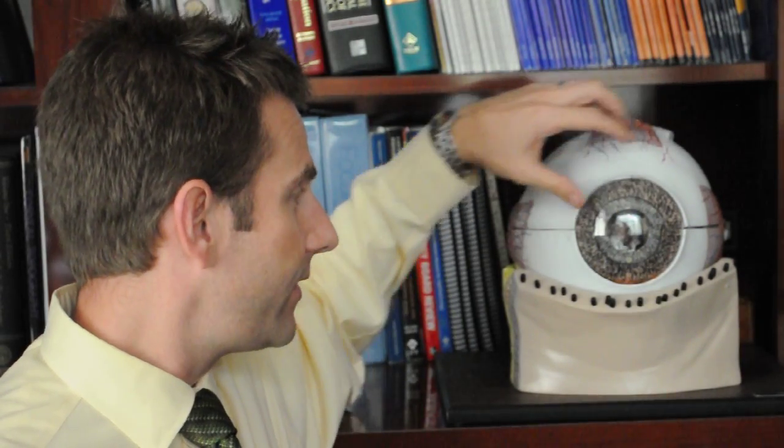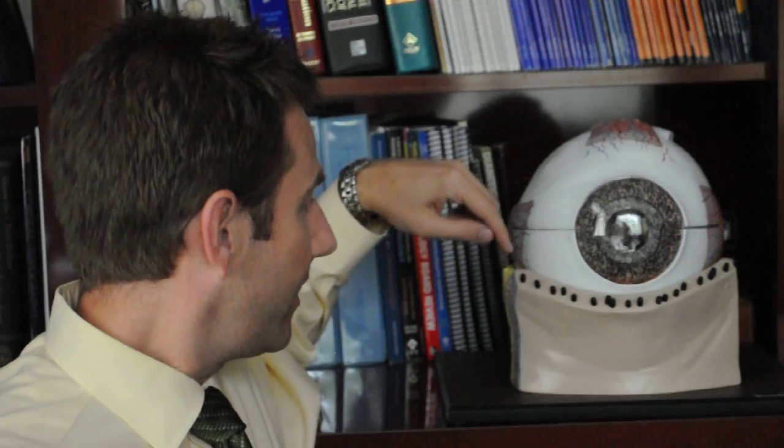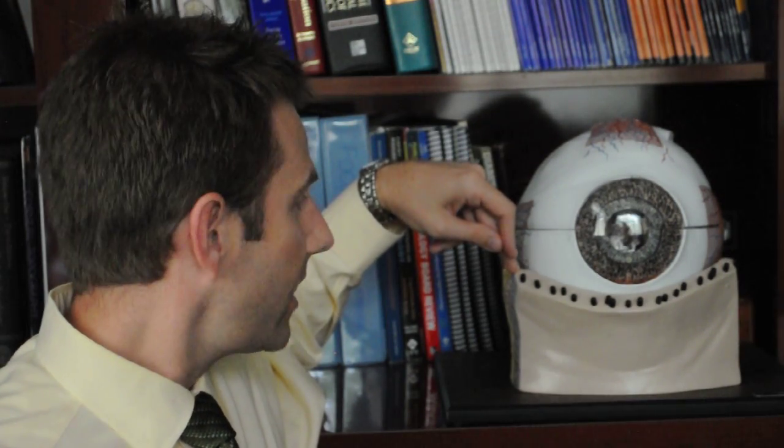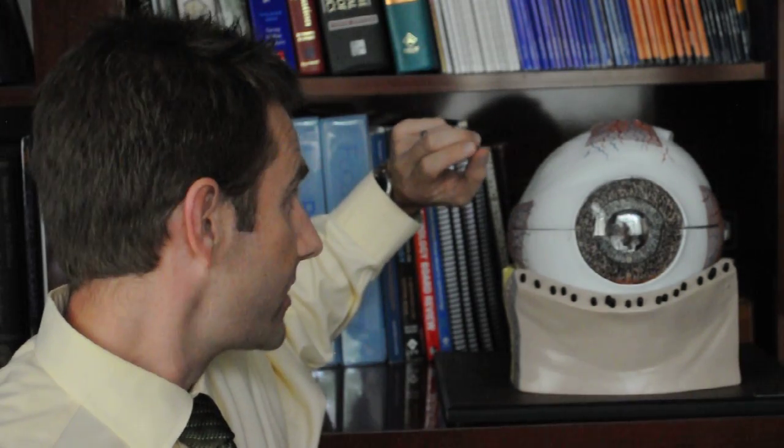These tears naturally are produced and then drained out through the eyelids. If this were someone's left eye, there's one tear drain in the bottom eyelid towards the center and one tear drain in the top eyelid towards the center.